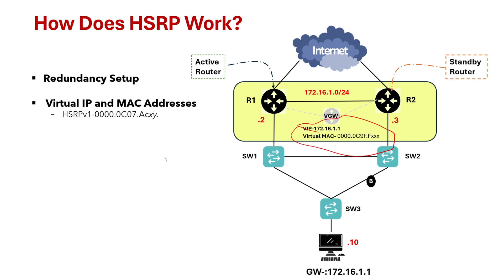There are two versions of HSRP. HSRP version 1 uses a MAC address of 0000.0C07.ACXY, where XY is the hex value representing the HSRP group number, differentiating between different HSRP groups. HSRP version 2 uses a different MAC address range.